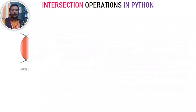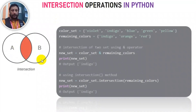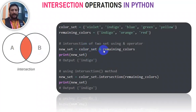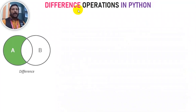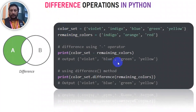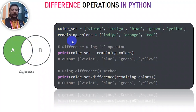The second part is the intersection operation, which gives common elements. The difference operation uses the minus symbol -. If you have violet, indigo and the other set has blue, green, yellow, the difference gives items in one set not in the other: color_set - remaining_color, or color_set.difference(remaining_color).